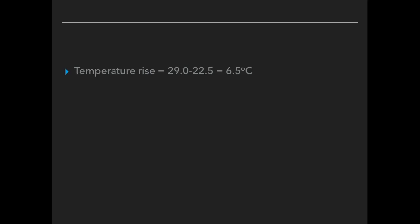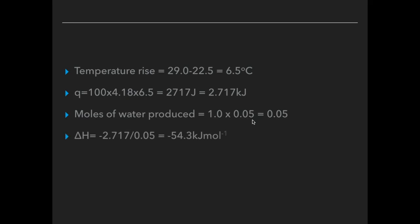So the temperature rise came out at 6.5 degrees. Q was 100 times 4.18 times that temperature rise, which is that many joules. Remember we've got to get into kilojoules, so dividing by 1000 gives us that. The moles of water produced will be the same as the moles of acid or the moles of alkali used. So we get 0.05. So delta H comes out at minus, don't forget that minus sign, 54.3 kilojoules per mole.